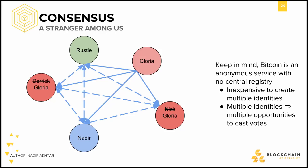In Bitcoin, anyone can join and anyone can participate. Because of the ease with which Bitcoin addresses can be generated, nothing is stopping Gloria from generating more identities and posing as Derek and Nick. It's inexpensive to create multiple identities, requiring only the generation of a random number, as seen in the identity section. Because of this low cost, Gloria can easily hold multiple Bitcoin identities to cast more votes than she should be allowed.